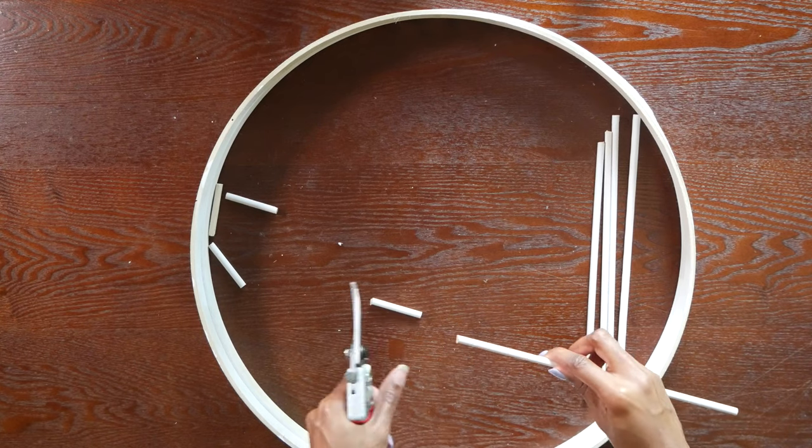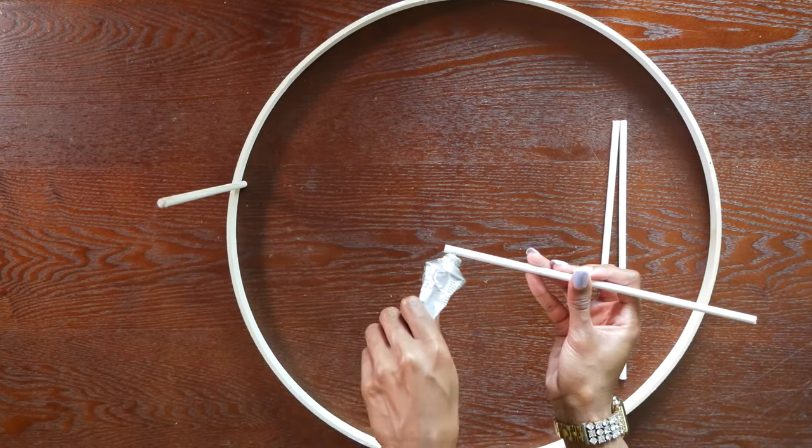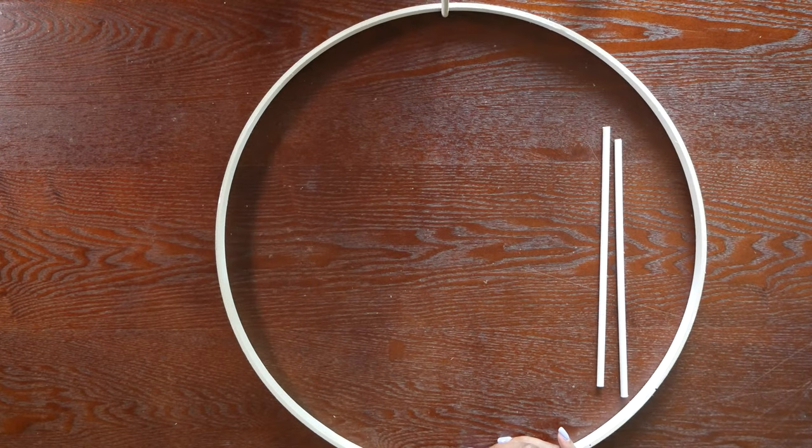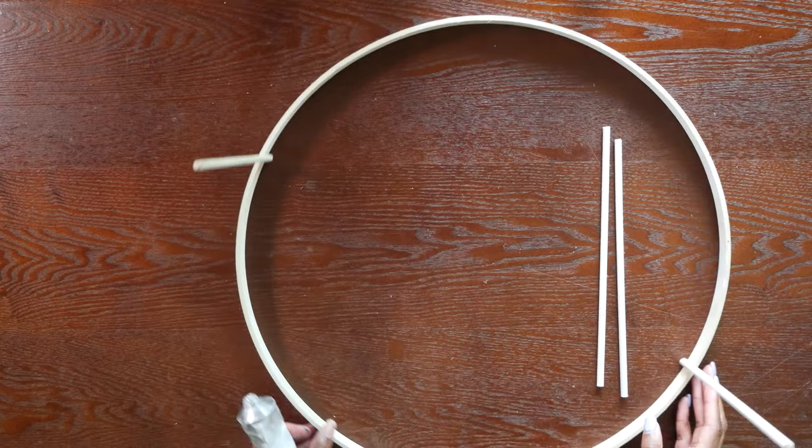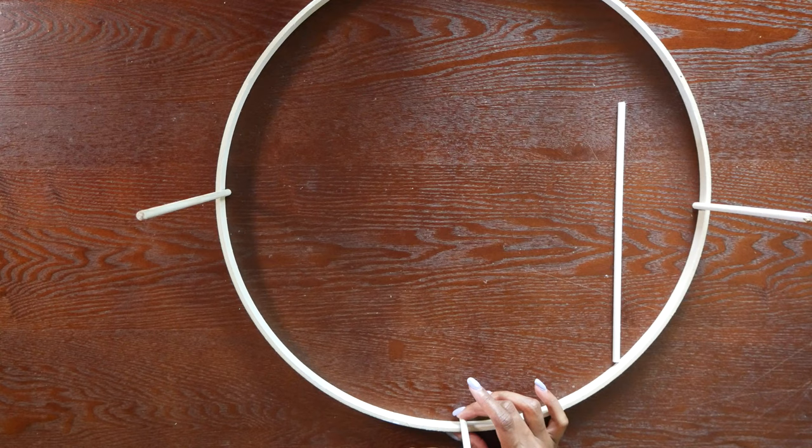Side note, excuse my table you guys. This is a cheap Walmart table and it came with white specks on it that are very hard to clean no matter how much I scrub. But you know, it doesn't go in my apartment anyway so this is foreshadowing for another DIY.